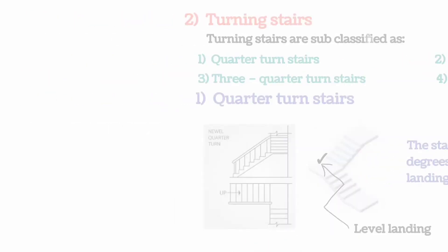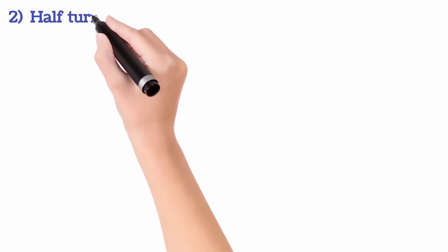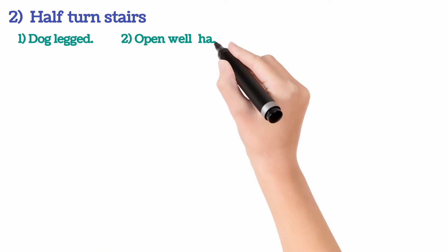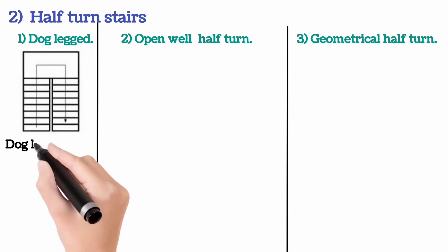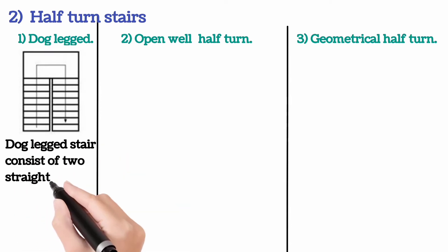Half turn stairs are further classified into: 1. Dog-legged, 2. Open well half turn, 3. Geometrical half turn. Dog-legged stair consists of two straight flights of steps with direct turns between them.